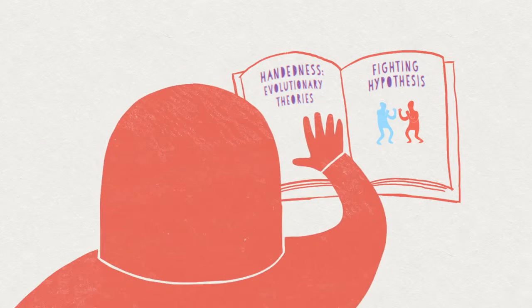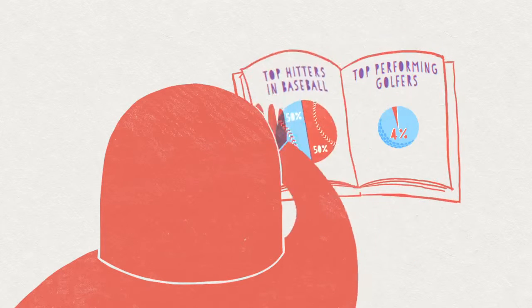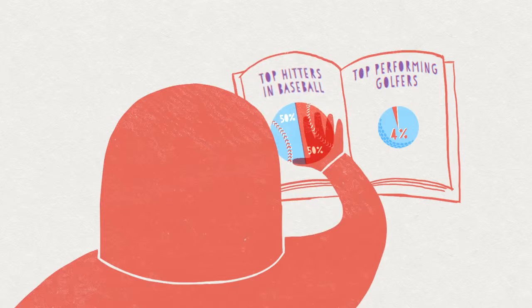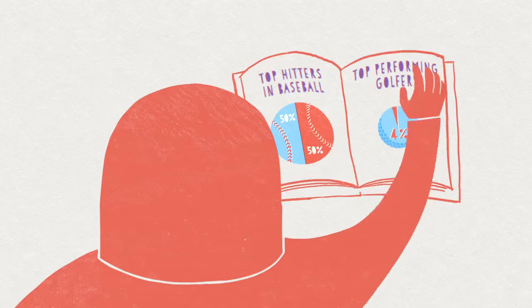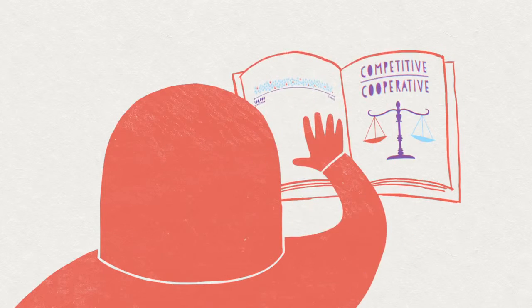So by correctly predicting the distribution of left-handed people in the general population, as well as matching data from various sports, the model indicates that the persistence of lefties as a small but stable minority reflects an equilibrium that comes from competitive and cooperative effects playing out simultaneously over time.